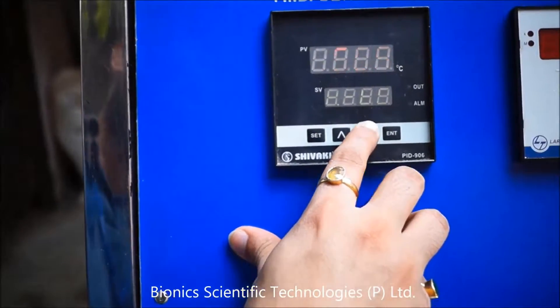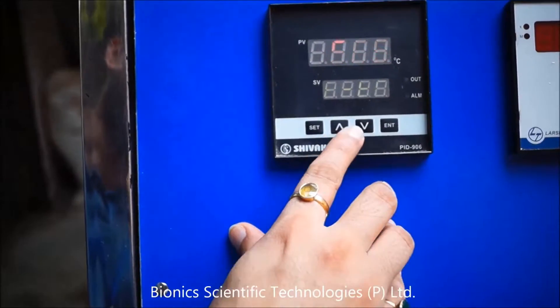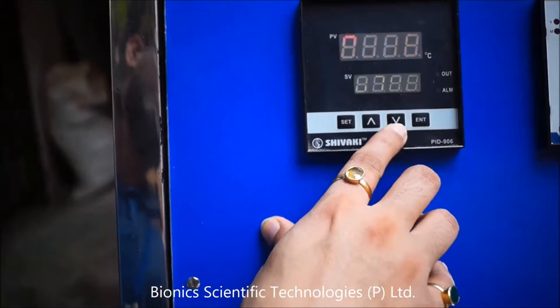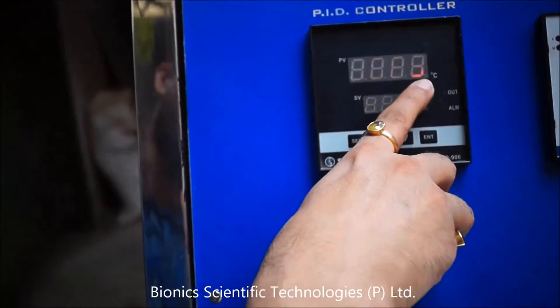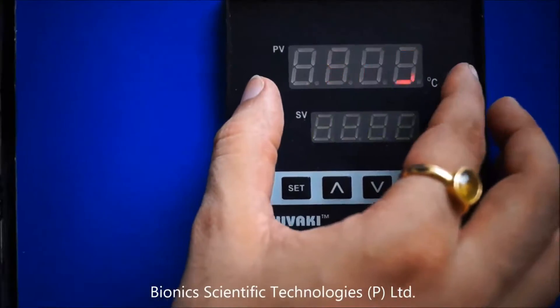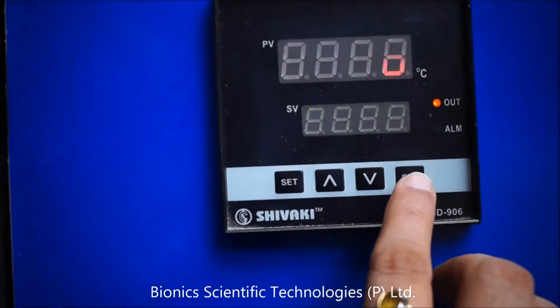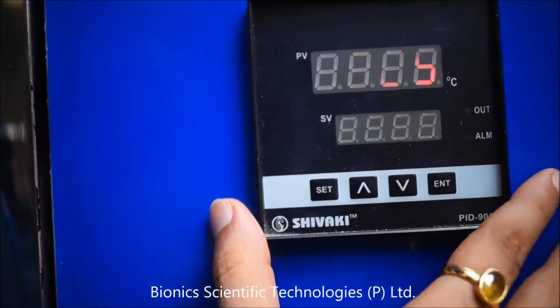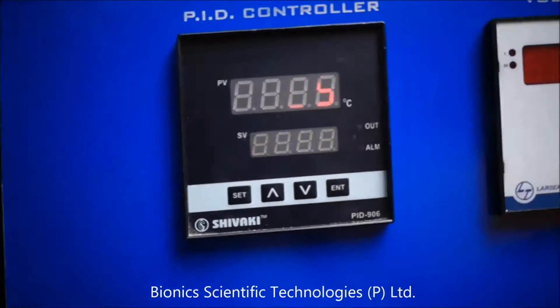Use up and down keys to set your desired temperature. Usually it is set between 800 degree celsius to 1000 degree celsius. When you see your desired temperature just press enter. Now the temperature of primary chamber is set.